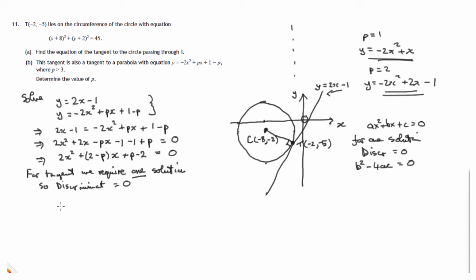So the discriminant is equal to 0. So in this case, b² where b is 2 - p. Let's just compare this quadratic that we've got with the general one: ax² + bx + c = 0. So we know a is 2, b is 2 - p, and c is p - 2. So b² is (2 - p)² minus 4 times a, that's 2, times c, which is p - 2.